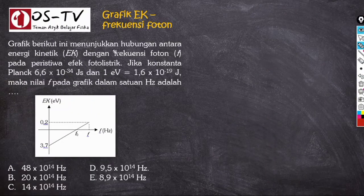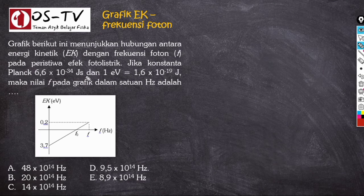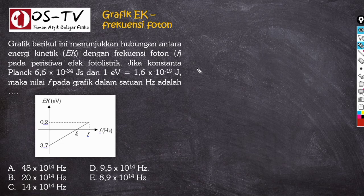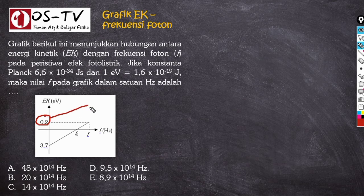Soal: grafik berikut ini menunjukkan hubungan antara energi kinetik dengan frekuensi foton pada peristiwa efek fotolistrik. Diketahui konstanta Planck h = 6,6 × 10⁻³⁴ J·s dan 1 eV = 1,6 × 10⁻¹⁹ joule. Nilai F atau frekuensi pada grafik dalam satuan hertz adalah berapa? Dari grafik, ketika frekuensi foton = F, energi kinetik EK = 0,2 eV.